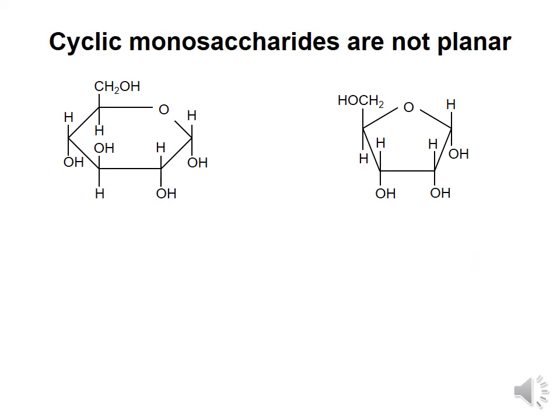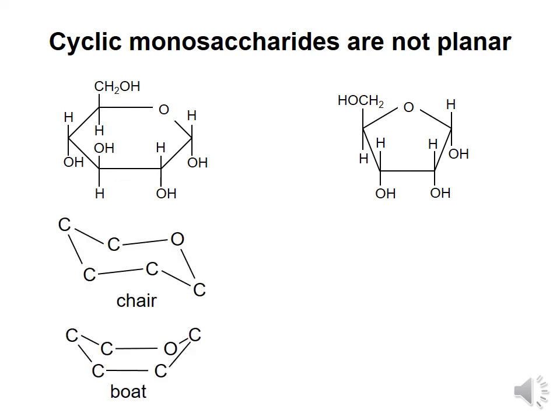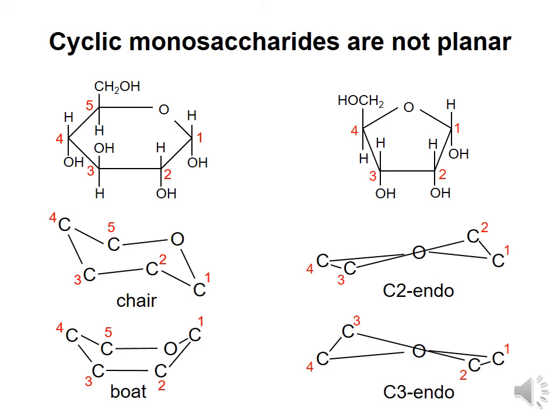It's important to remember that a Haworth projection is a simplified depiction of a monosaccharide. In reality, it is energetically unfavorable for all the atoms of the ring to exist on the same plane. Six-membered rings are found in either chair or boat conformations, as shown. The chair conformation is more energetically favorable than the boat conformation. Five-membered rings can form C2-endo or C3-endo conformations, depending on which carbon atom is above the plane formed by the other four atoms.